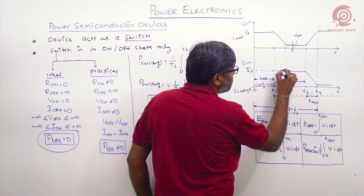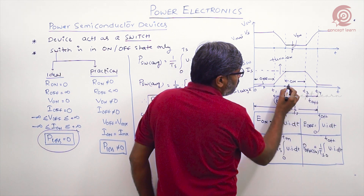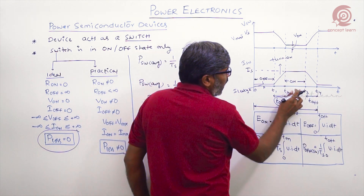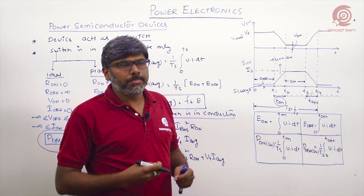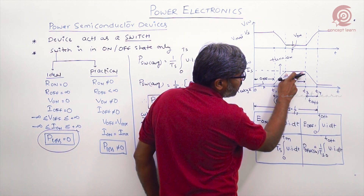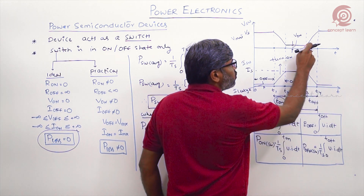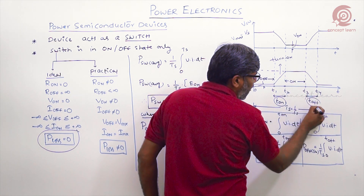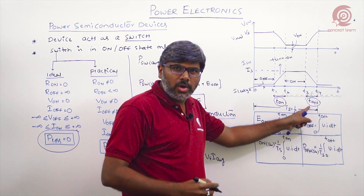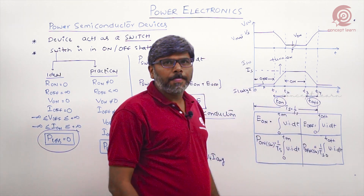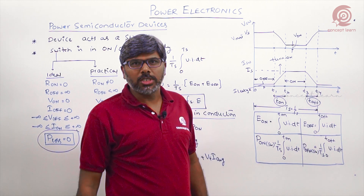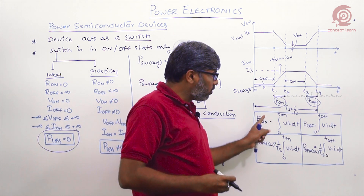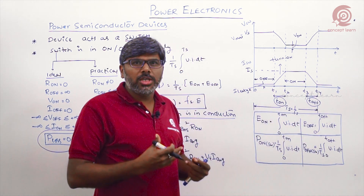While the switch is in the on state it carries the full load current, and the voltage across it is the on-state voltage drop V_on, which is very small. At t3, the switch is turned off by removing the gate signal. The current does not fall instantaneously; it decreases gradually, while the voltage increases gradually, reaching V_max at t4. This t3-to-t4 period is the turn-off time, which is finite — unlike the ideal case — so some energy is lost during the turn-off process as well.